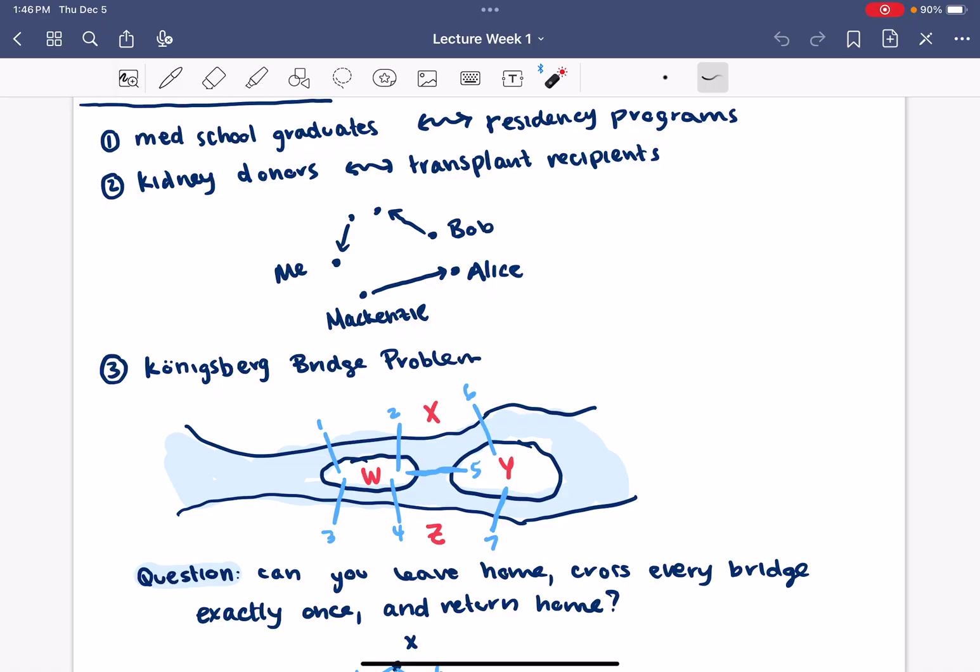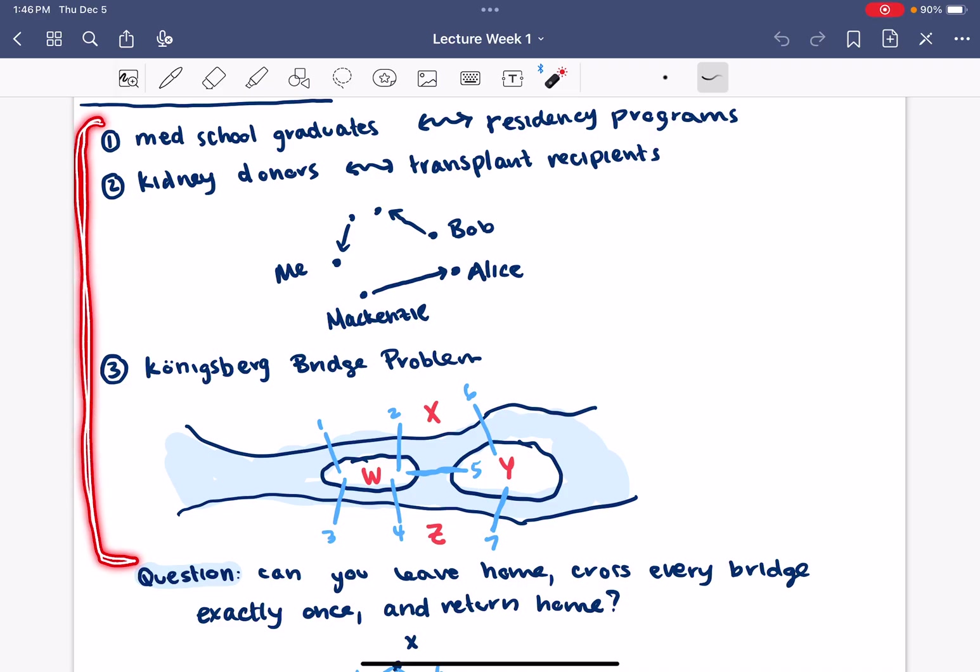We started off by trying to motivate graph theory by talking about some different problems in real life. For example, you might be trying to match medical school graduates with residency programs, or match kidney donors with transplant recipients, and you could represent this by thinking of the people as vertices and drawing directed arrows indicating where a kidney is coming from and where it's going.